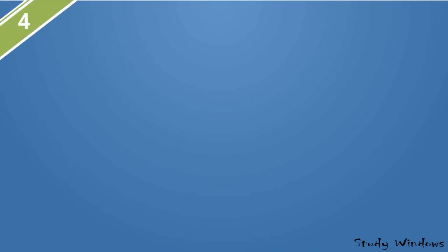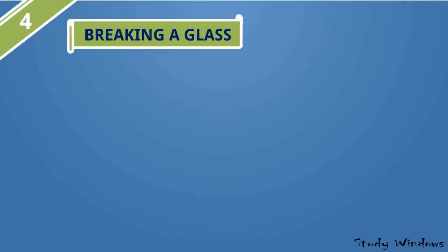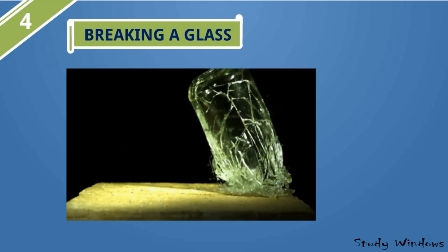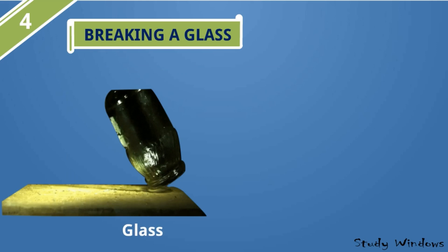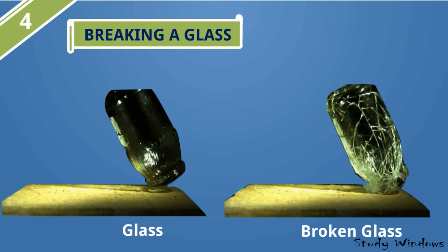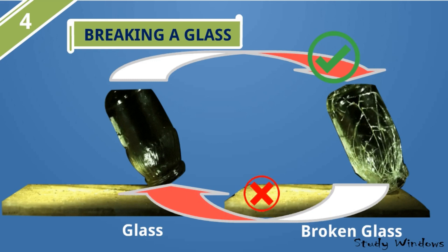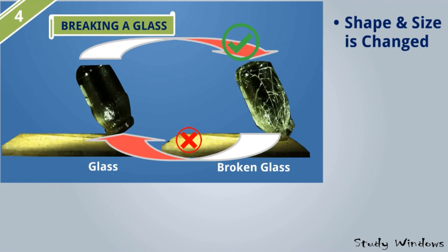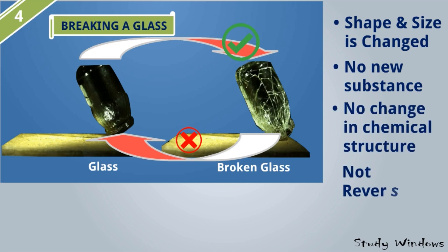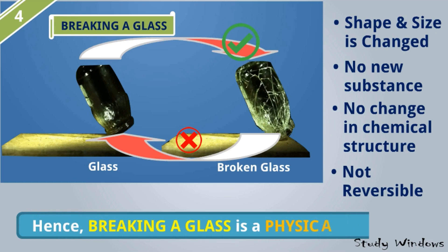Breaking a glass: Look at this example — a glass falls and breaks. We can see the glass before and after breaking. We can break the glass at any time, but we cannot restore the broken glass to its original form. Shape and size is changed. No new substance is formed because broken glass is still glass. There is no change in chemical structure, but it is not reversible. Hence, breaking a glass is a physical change.